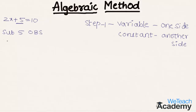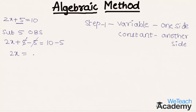By subtracting, we get 2x plus 5 minus 5 equal to 10 minus 5. On the left hand side, plus 5 and minus 5 get cancelled, and we get 2x equal to 5.